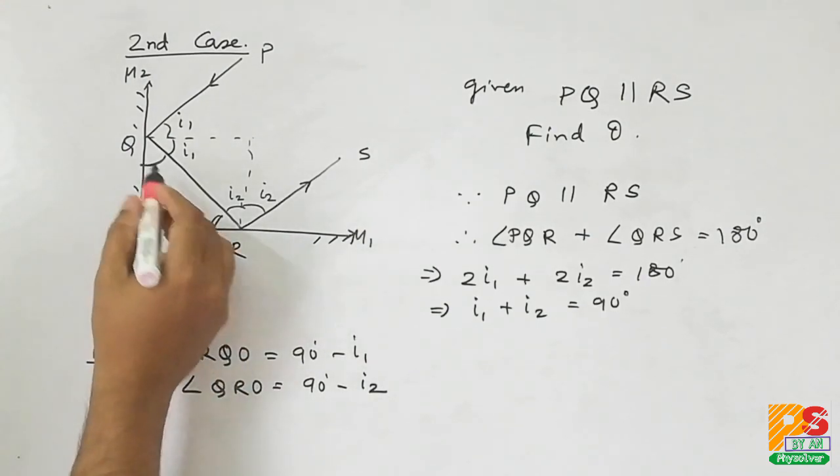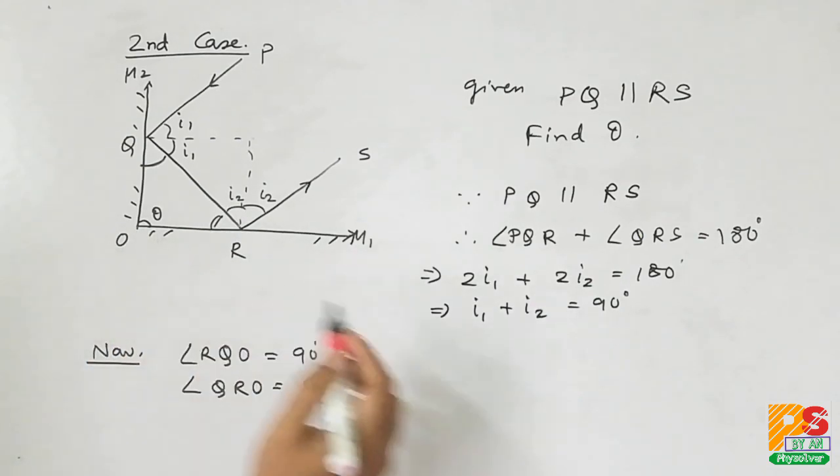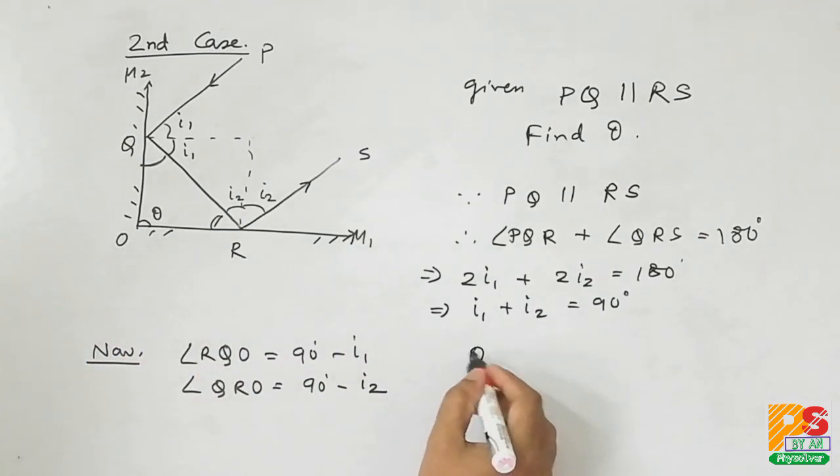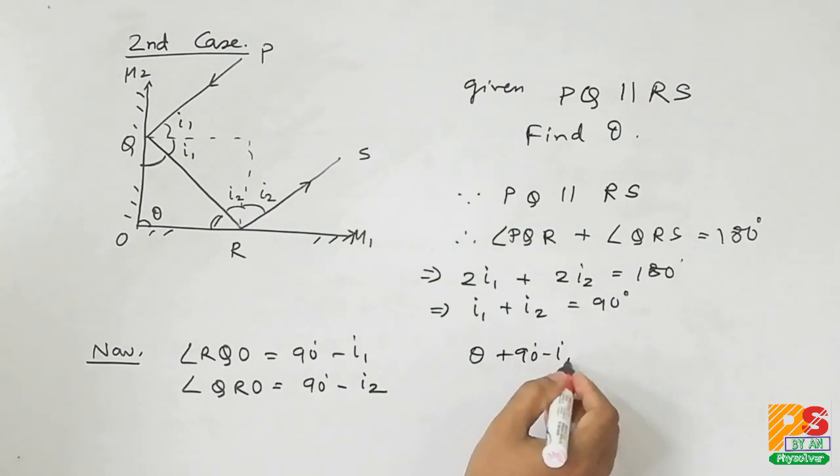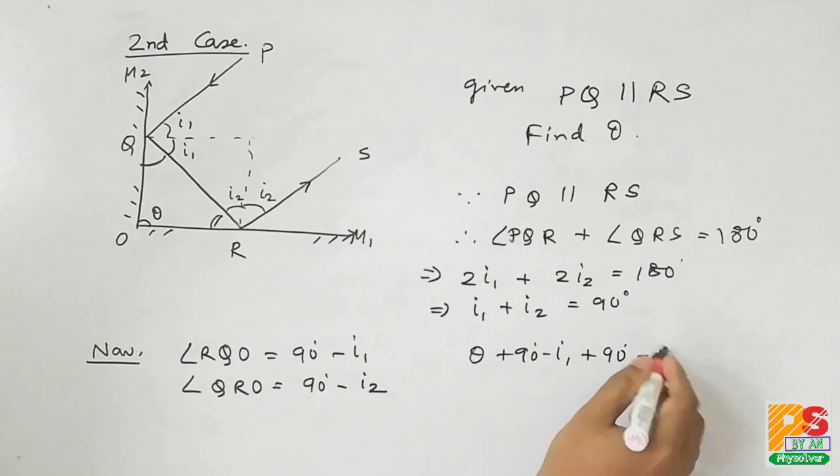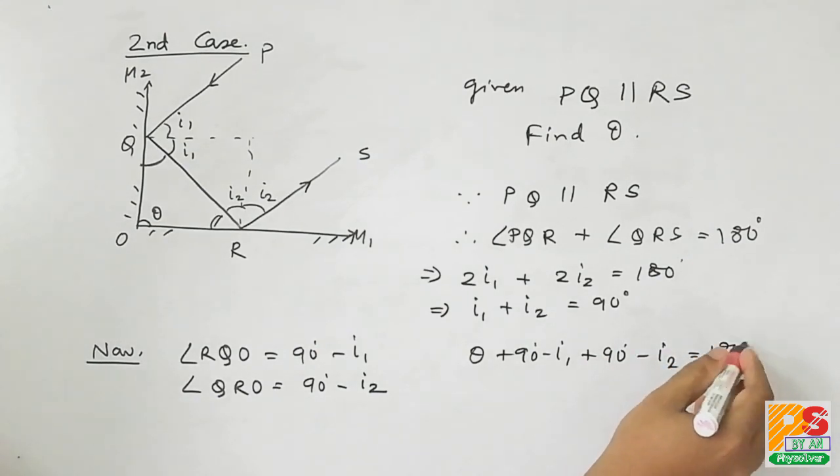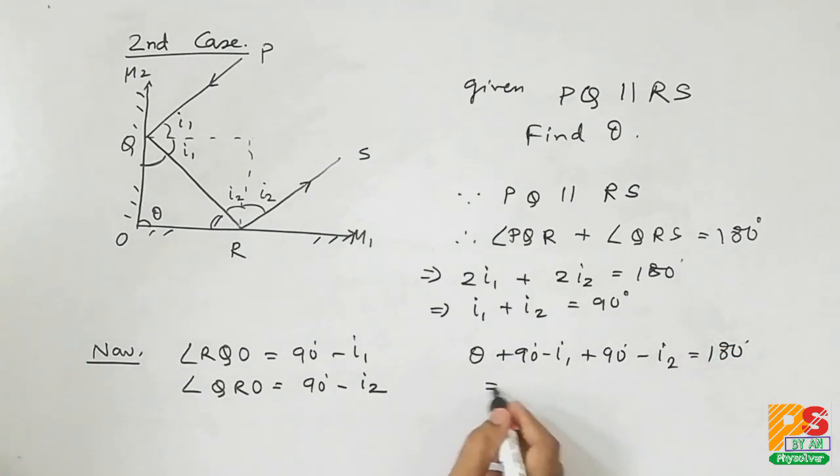Therefore we can say in the triangle OQR, sum of the three angles should be equals to 180 degrees. So adding them up, we will get theta equals to I1 plus I2.